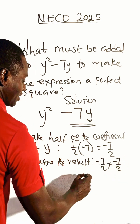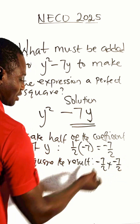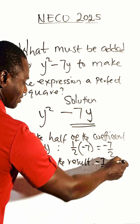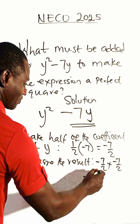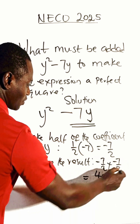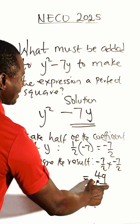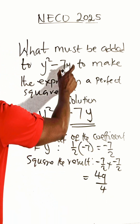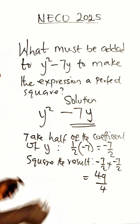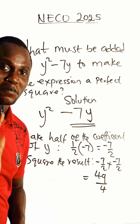We square it: minus 7 over 2 times minus 7 over 2. Minus times minus is plus, 7 times 7 is 49, and 2 times 2 is 4. So 49 over 4 is the value that must be added to make the expression a perfect square.